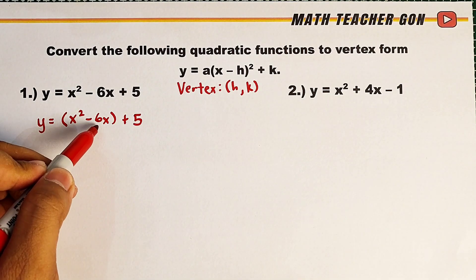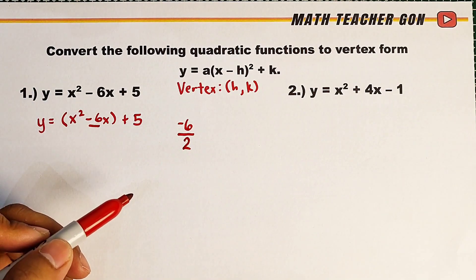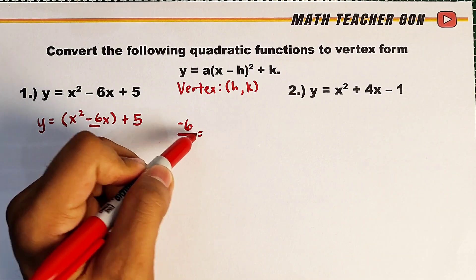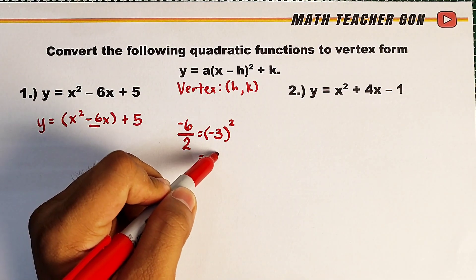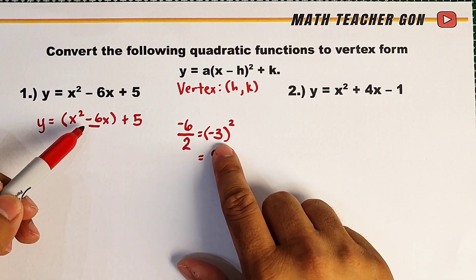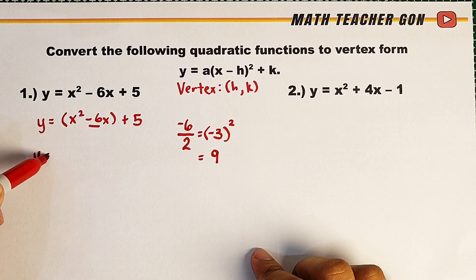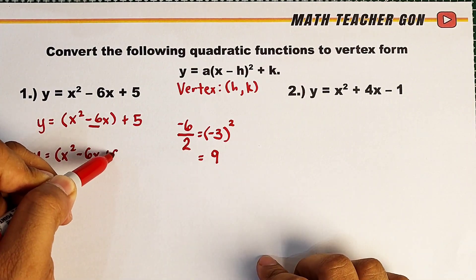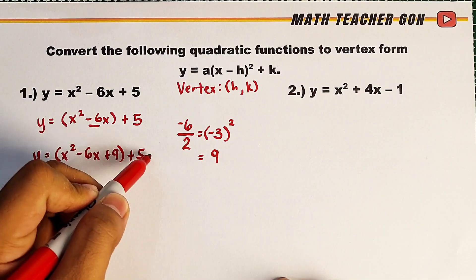To complete the square, get the value of b which is negative 6, then divide it by 2. The answer is negative 3. Square it and the answer is 9. So what will happen here is it becomes y is equal to x squared minus 6x plus 9, and aside from adding 9, we will negate this by subtracting 9.